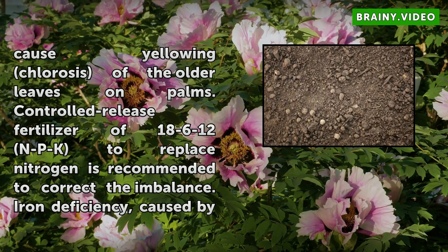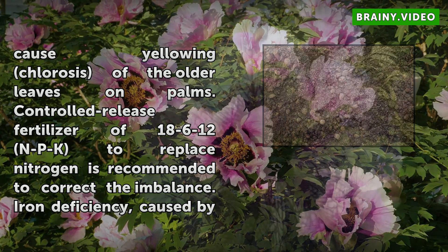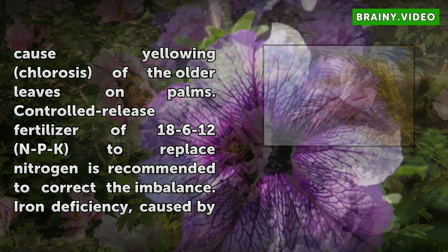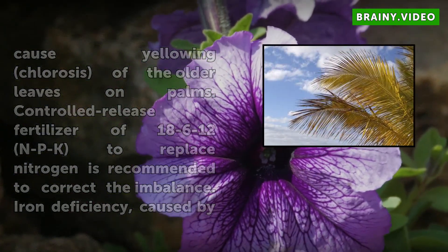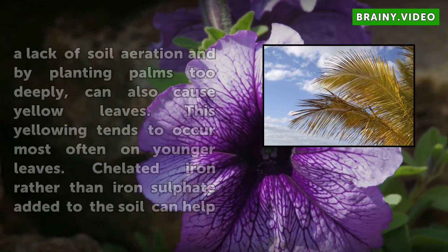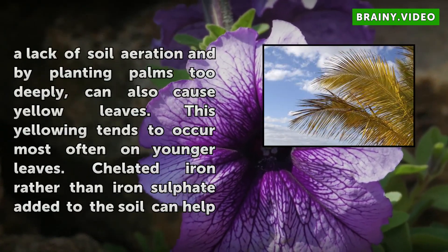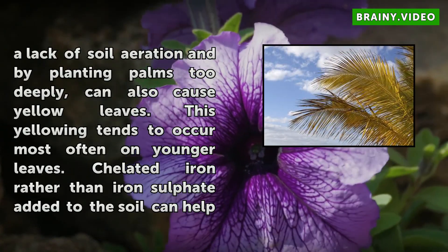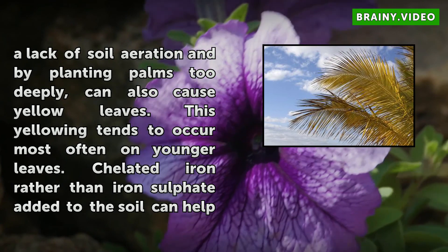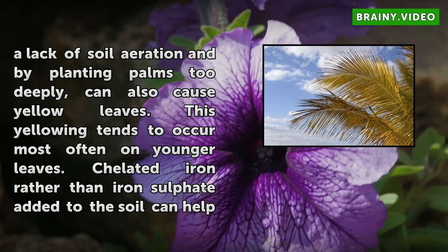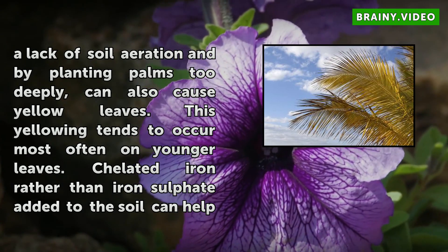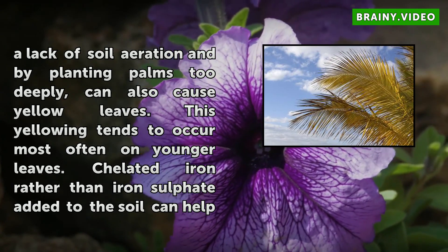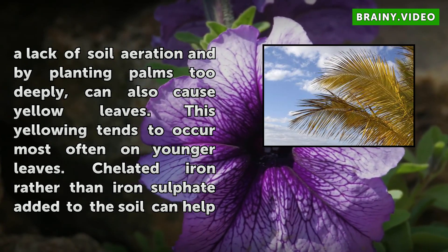Iron deficiency, caused by a lack of soil aeration and by planting palms too deeply, can also cause yellow leaves. This yellowing tends to occur most often on younger leaves. Chelated iron, rather than iron sulfate, added to the soil can help the problem to some extent, but the underlying cultivation problem must be corrected.